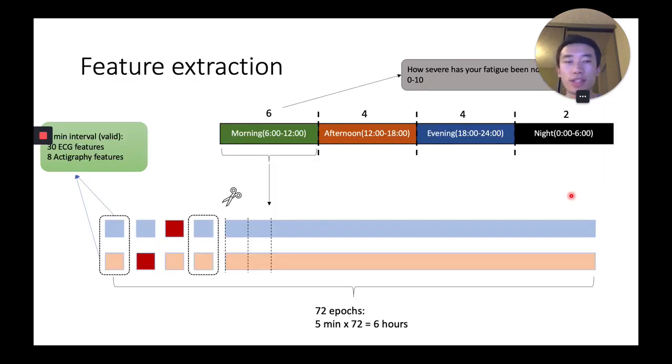For the feature extraction, we divide the raw data into four segments each day: morning, afternoon, evening, and night. Each segment corresponds to a fatigue score from a questionnaire ranging from 0 to 10. Within each segment, we divide the data into five-minute epochs and model upon those five-minute epochs.